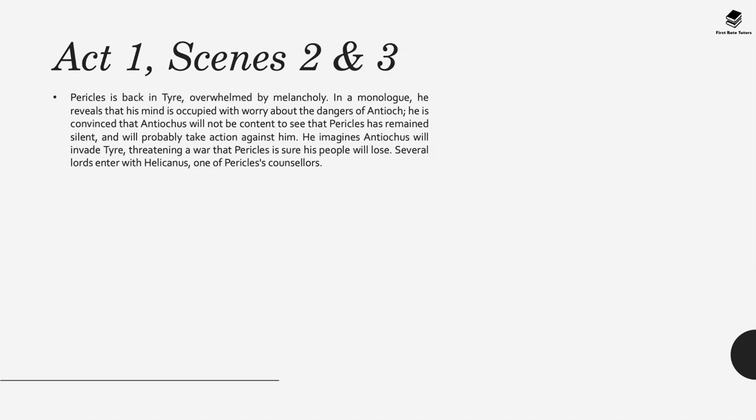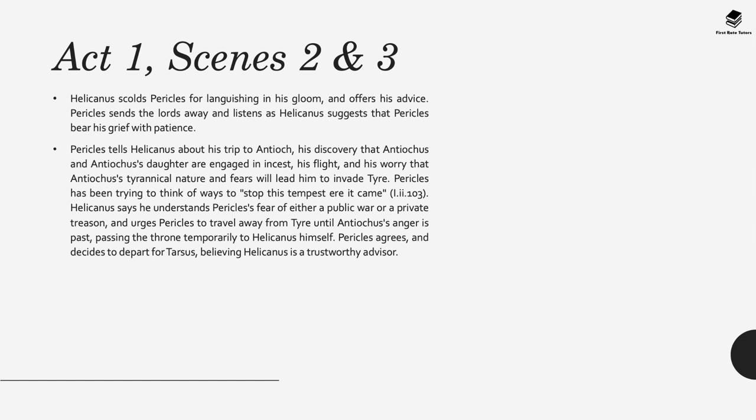In Act 1, Scenes 2 and 3, Pericles is back in Tyre, overwhelmed by melancholy. In a monologue he reveals his mind is occupied with worry about the dangers of Antioch, convinced Antiochus will take action and possibly invade Tyre. Helicanus scolds Pericles for languishing in gloom and offers advice. Pericles sends the lords away and listens to Helicanus, who suggests he bear his grief with patience. Pericles tells him about the trip to Antioch and his discovery of the incestuous relationship, and his fear that Antiochus will invade Tyre.